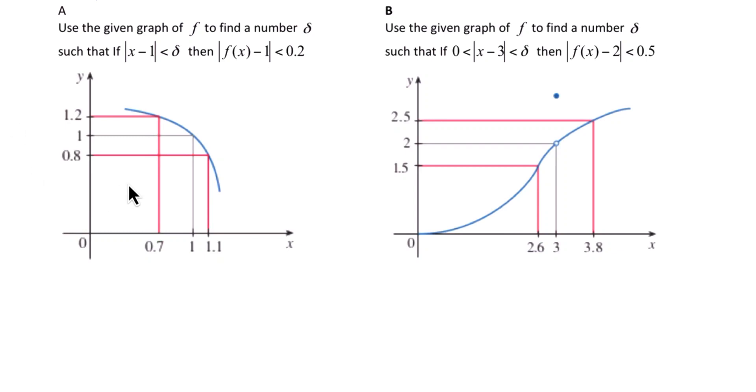In example A, we're given the graph of f and we're looking for a number delta. Notice that epsilon is 0.2, so if we look around our limit of 1 here, we have an epsilon window of 0.2 in both directions, up and down.